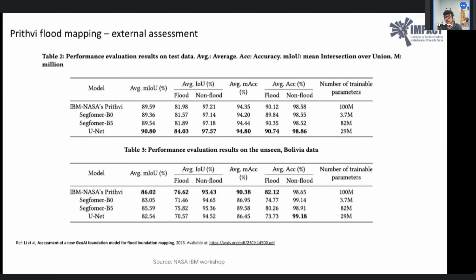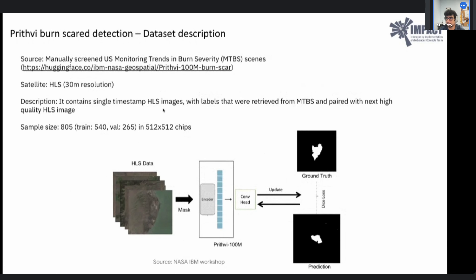An external assessment with IBM NASA Prithvi, SegFormer, and U-Net was also performed, including testing on unseen data in Bolivia — a region the model had never seen, as it was primarily trained on US CONUS region. The average mIoU was highest for the IBM Prithvi model. The next task was burn scar detection using HLS 30-meter resolution data available on Hugging Face, with 805 samples at 500 by 500 pixels.